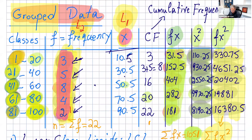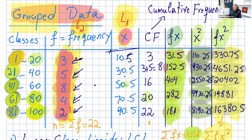Then we have grouped data. Grouped data is when we have a table like this — you are given, or sometimes make yourself, classes such as 1–20, 21–40, 41–60, 61–80, 81–100, along with frequencies. For example, if these are test scores, 3 people scored from 1 to 20, 5 people scored from 21 to 40, 8 people scored from 41 to 60, 4 people scored from 61 to 80, and 2 people scored from 81 to 100. Or if these are ages, 3 people are aged 1 to 20 years old, and so on.